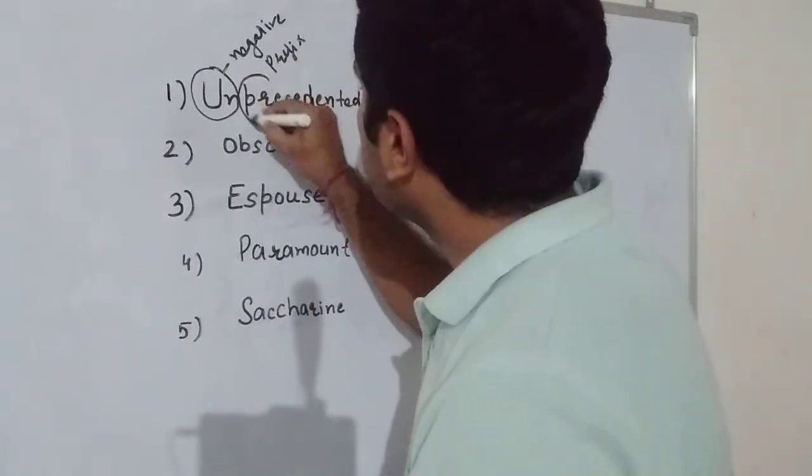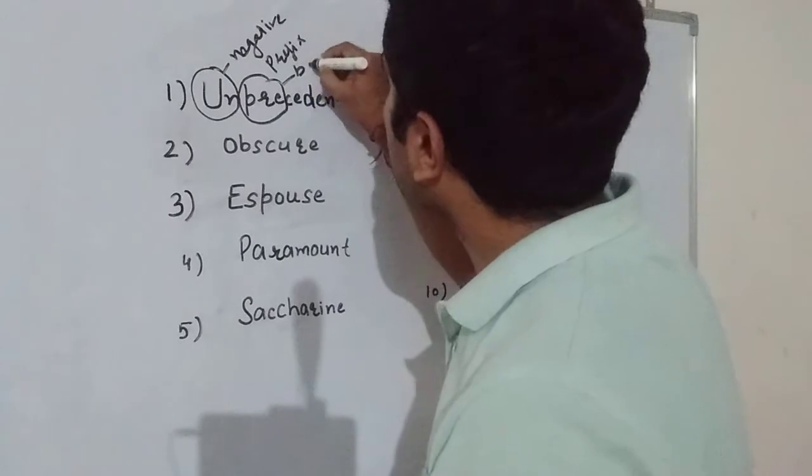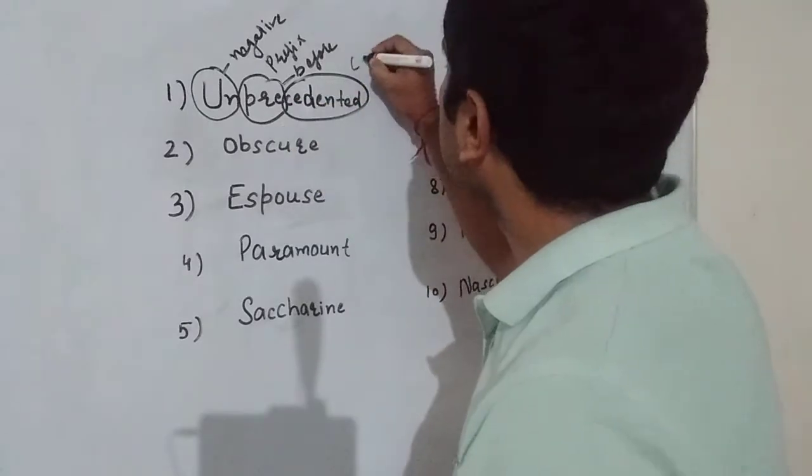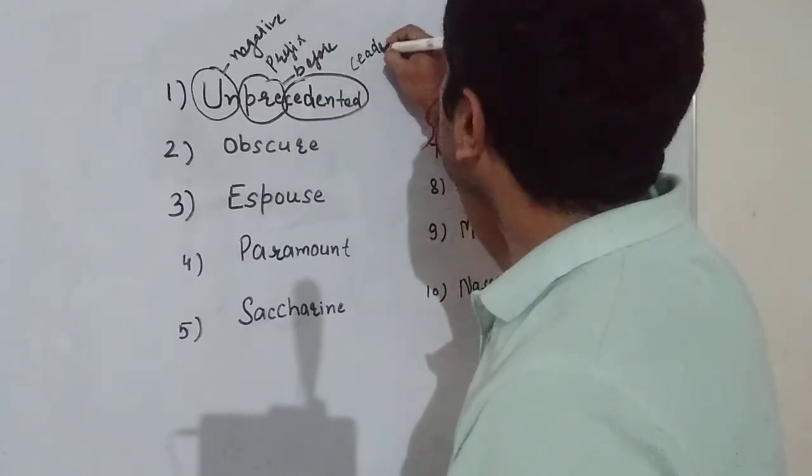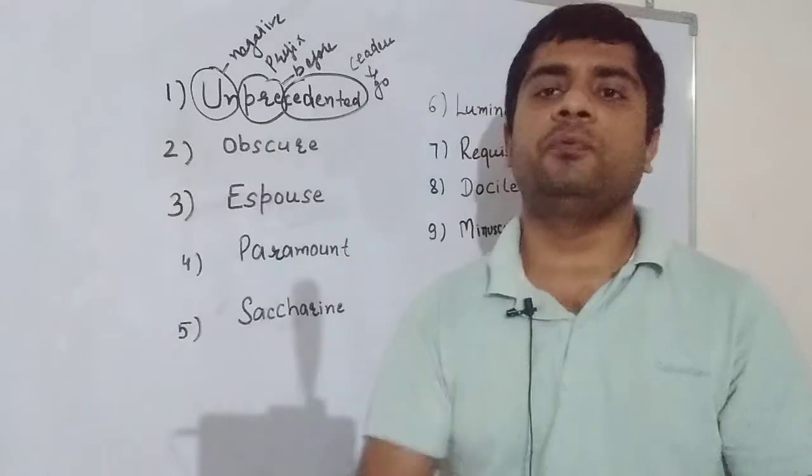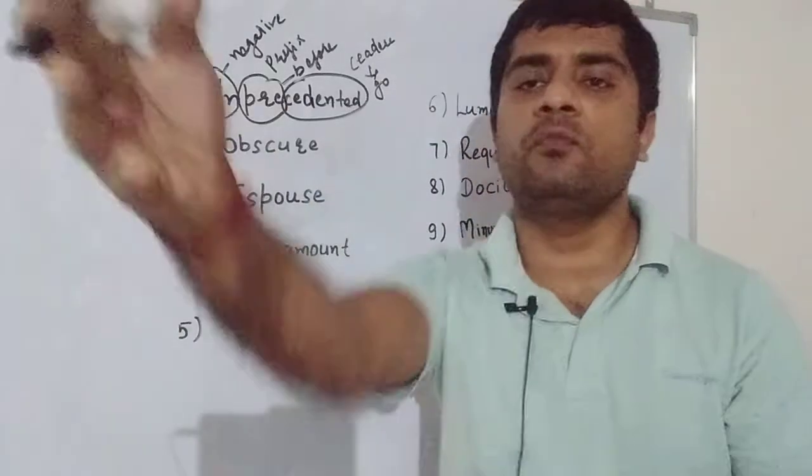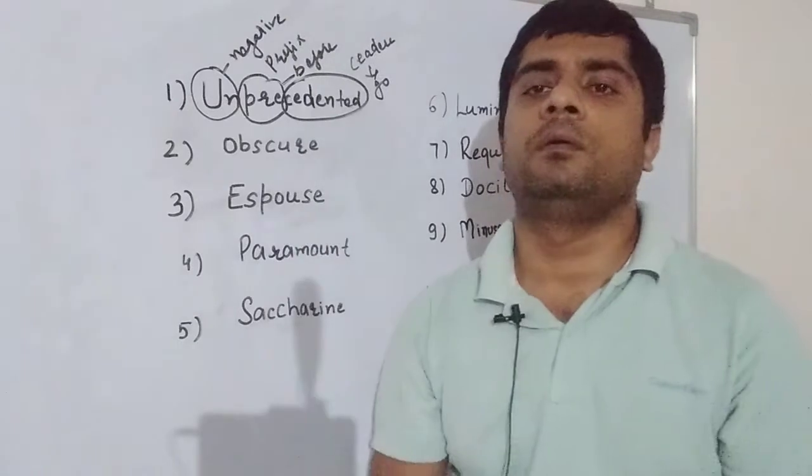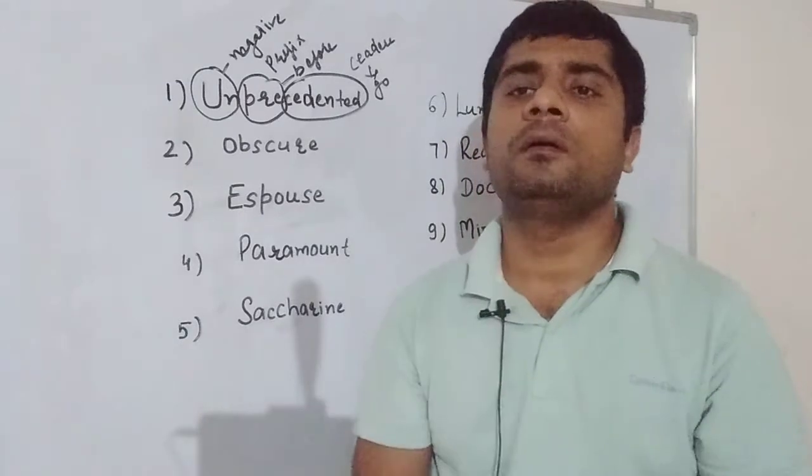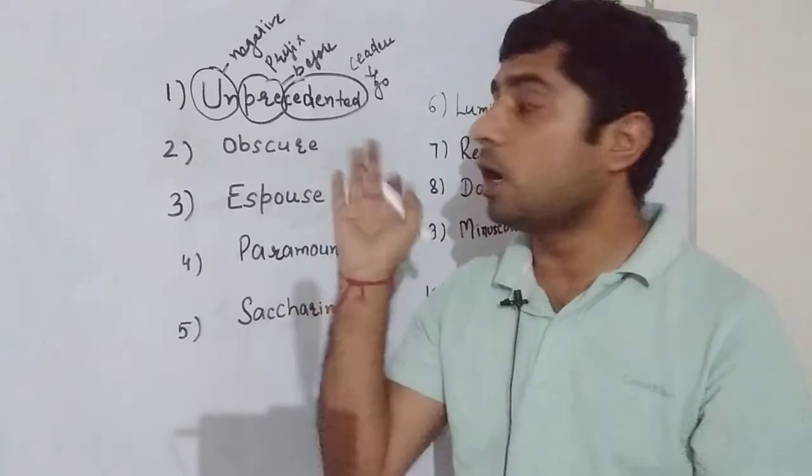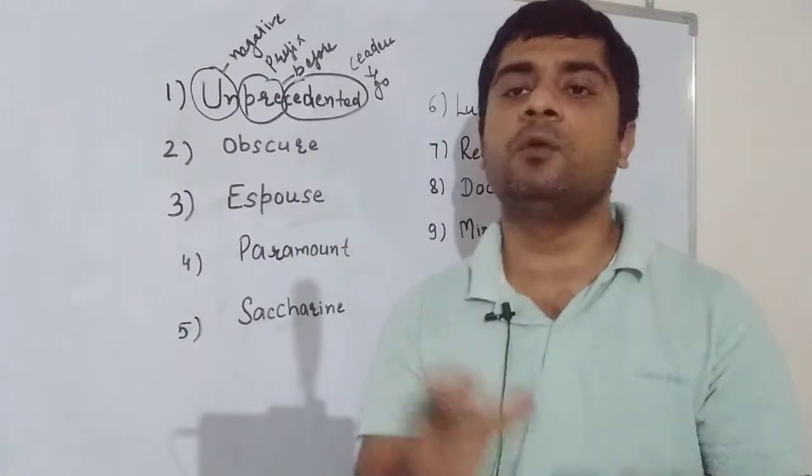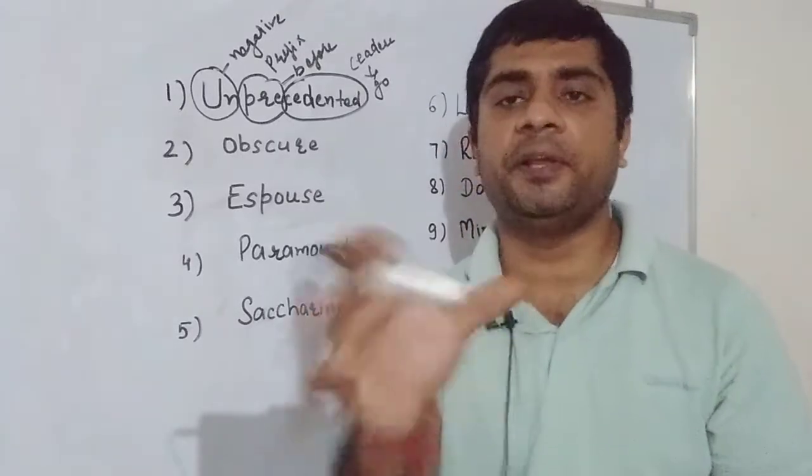It's Latin. Precedent is ki ignore ho to jo precedent kholata hai go before, kisi ke peeche jana, kisi ko follow karna. Jo param prakat tarike se ho. Precedent kya hoga, jo param prakat tarike se ho. And unprecedented kya hoa, jo param prakat tarike se na ho, jo abhutpurv ho, jo pehle kabhi nahi ho, jo pehli baar ho, usko kya bolenge unprecedented.